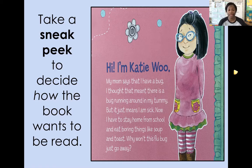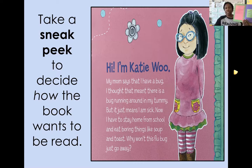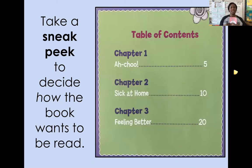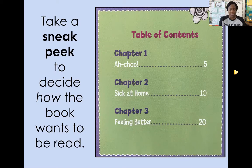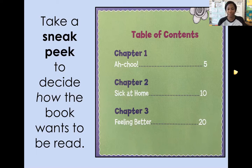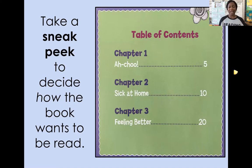Now readers, there's one more place that we can check as we're taking our sneak peek. We've looked on the front, we've looked on the back, and now we're going to open up the book and take a look at the table of contents. Chapter one is called 'Achoo' — so that chapter is probably about Katie Wu being very sick, so we'd want to read it in a sick type of voice, sneezing, not feeling good. Chapter two is called 'Sick at Home' — and we know from the back blurb that she's bored at home, so maybe that chapter wants to be read in a bored and annoyed voice. Chapter three says 'Feeling Better' — so maybe that chapter should be read in a happy and relieved voice.